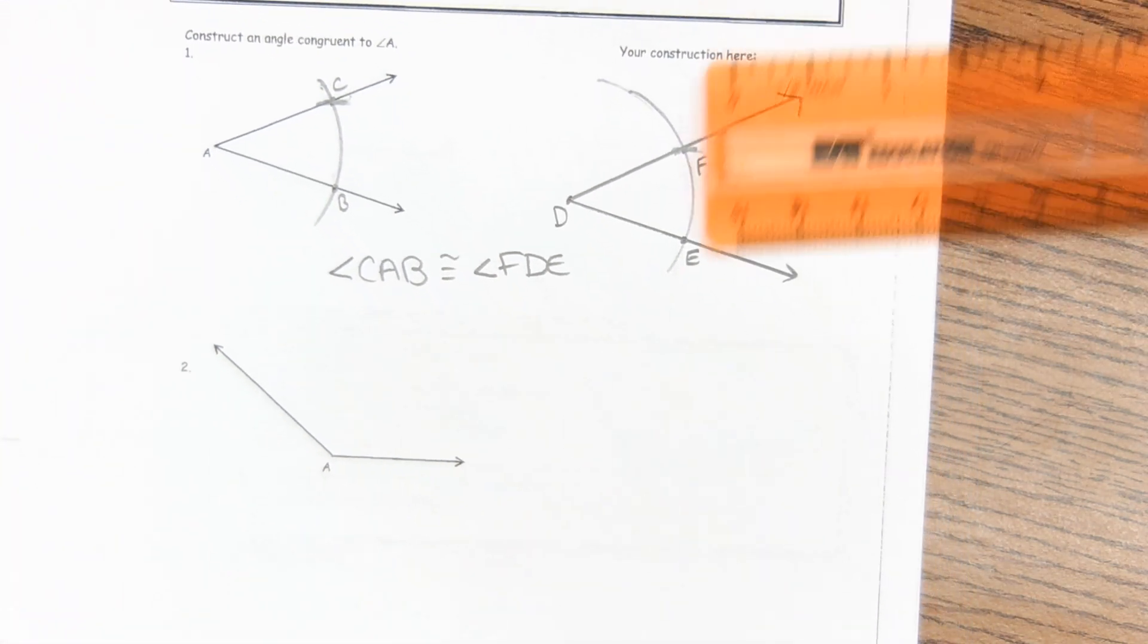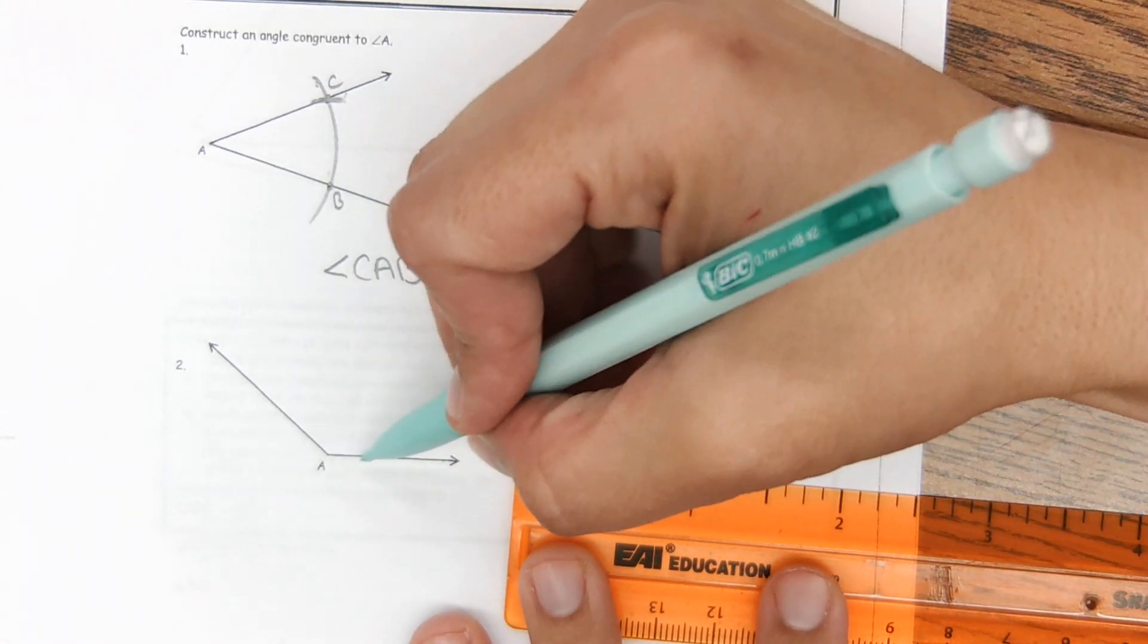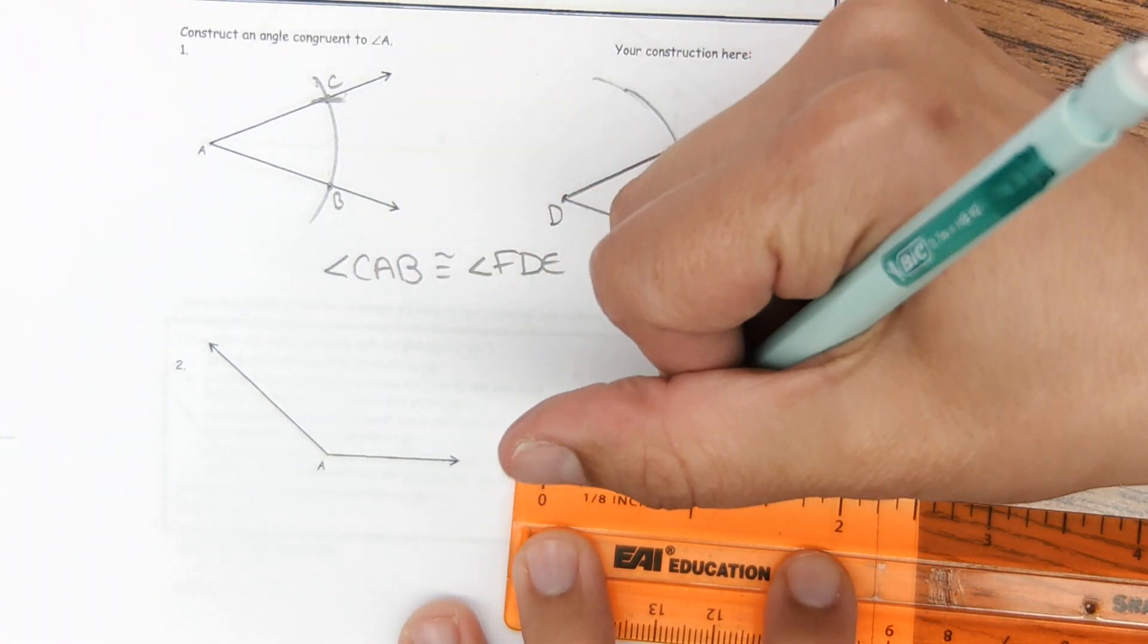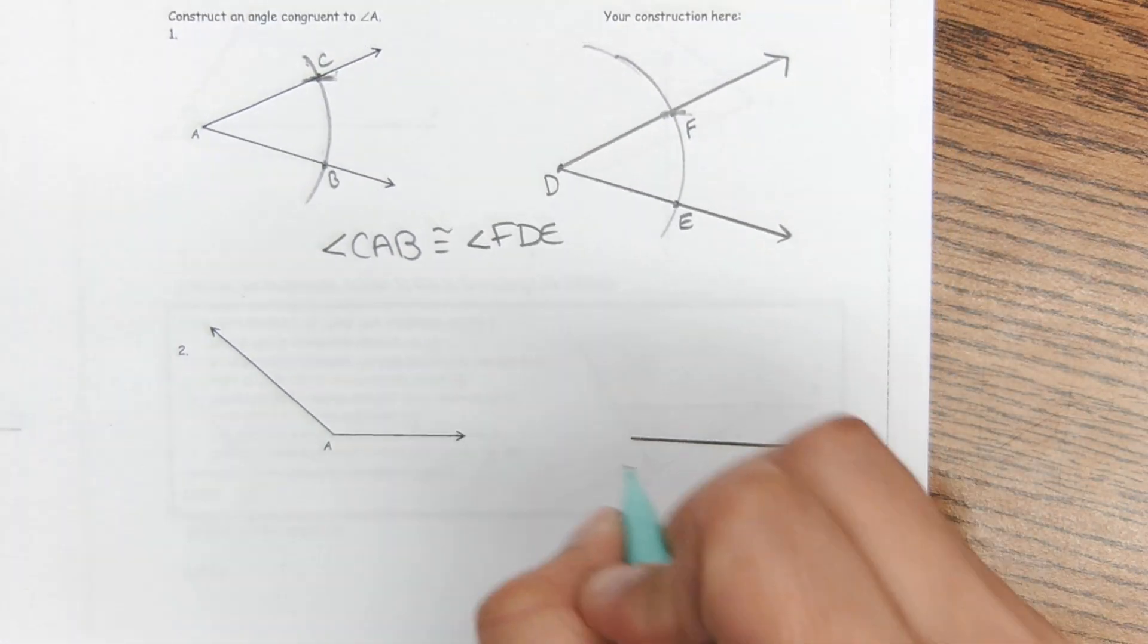Number two. We're doing the same thing again. We're going to make this bottom ray. This would be ray right here. Label this D.